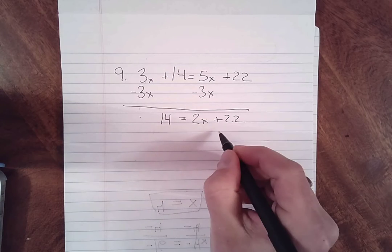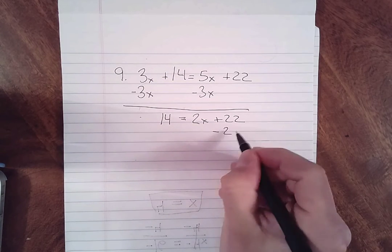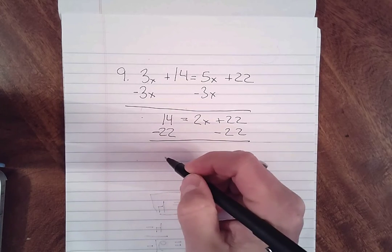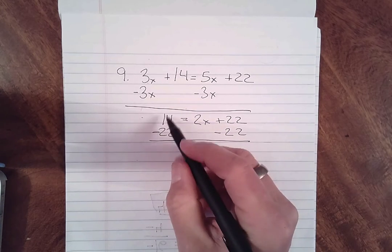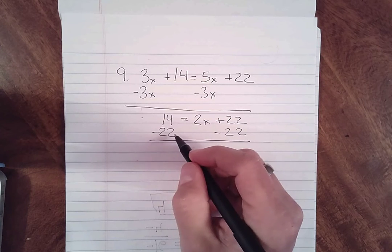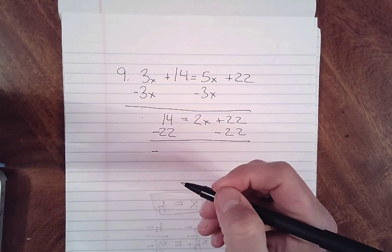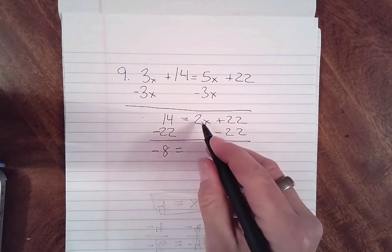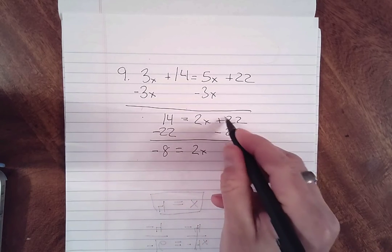Now I have to get my numbers to the opposite side, so I'm going to subtract those, and so over here I am now gonna have 14 minus 22, so that's gonna give us a negative, and negative 8 is equal to 2x, and again, those cancelled.